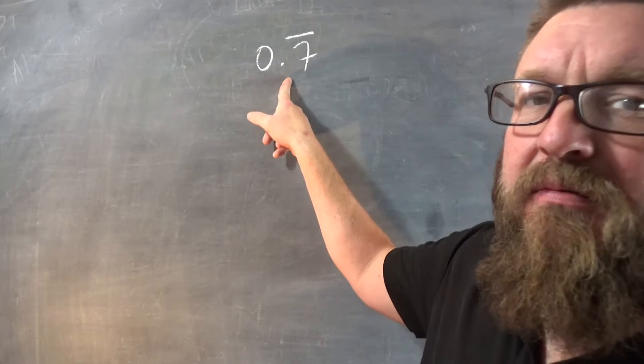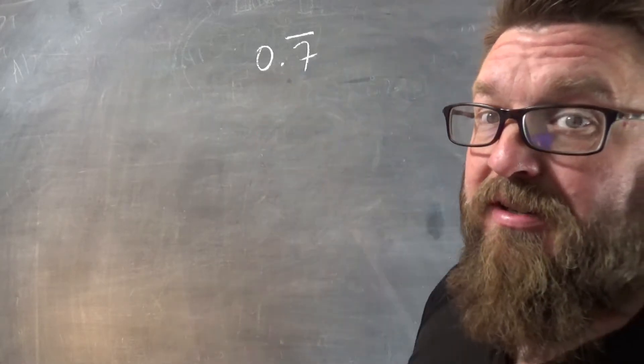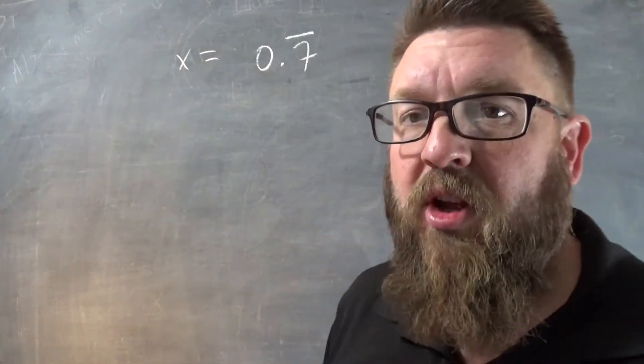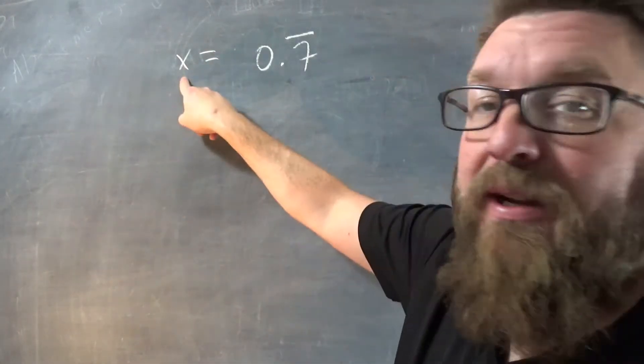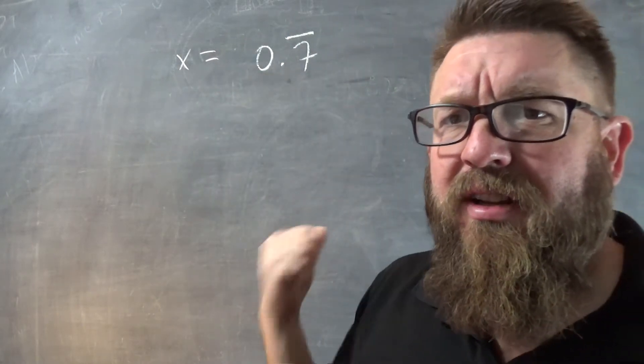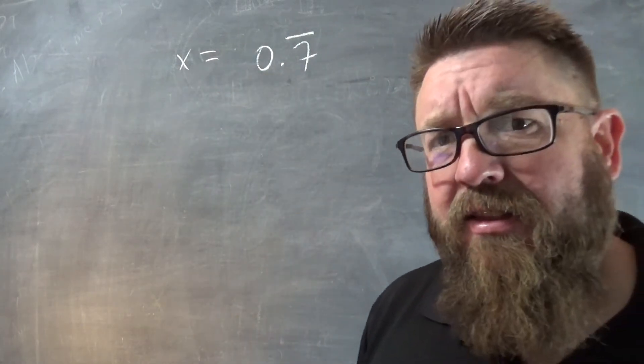Now, here we go. We don't know what number this is as a fraction, so we're going to say that's x. X will be our answer. X will be the fraction whose decimal equivalent will be this. Now, do you see it starts repeating at the tenth place?